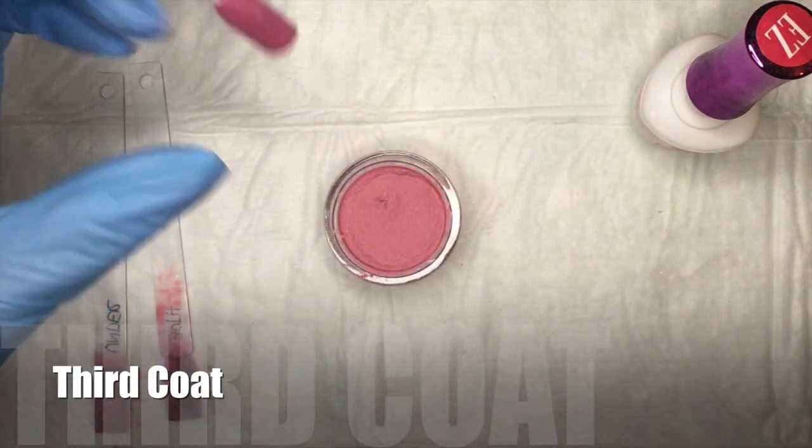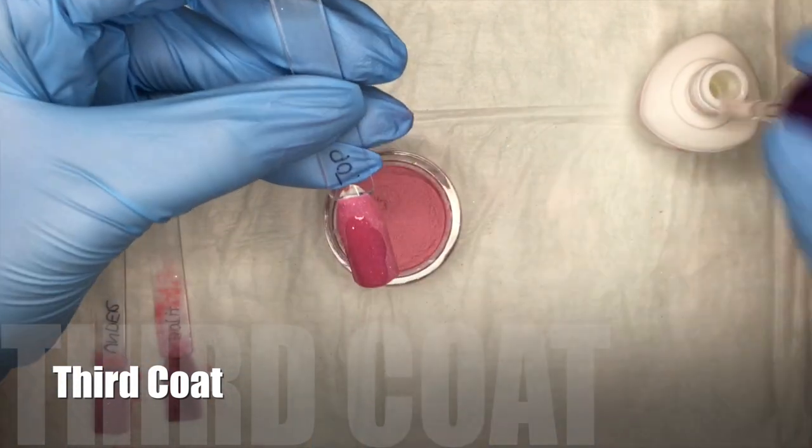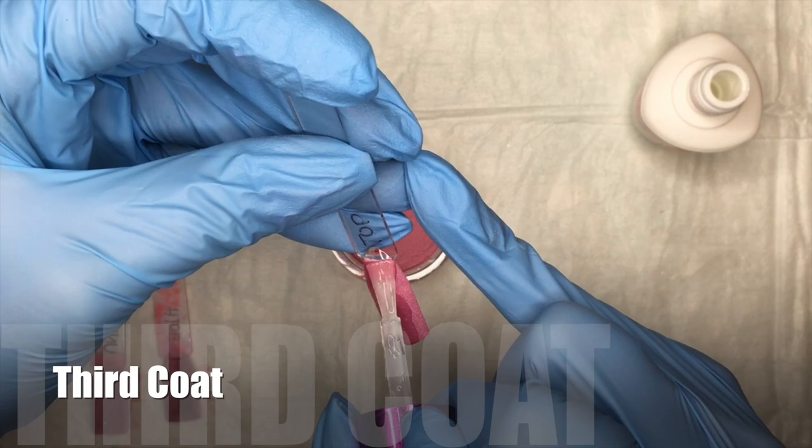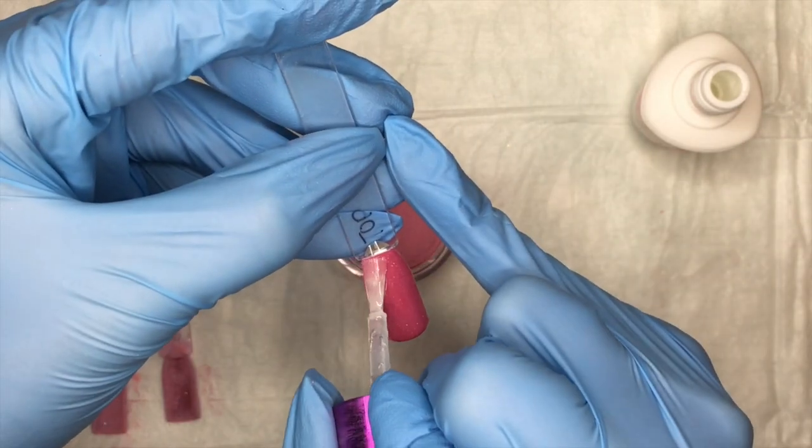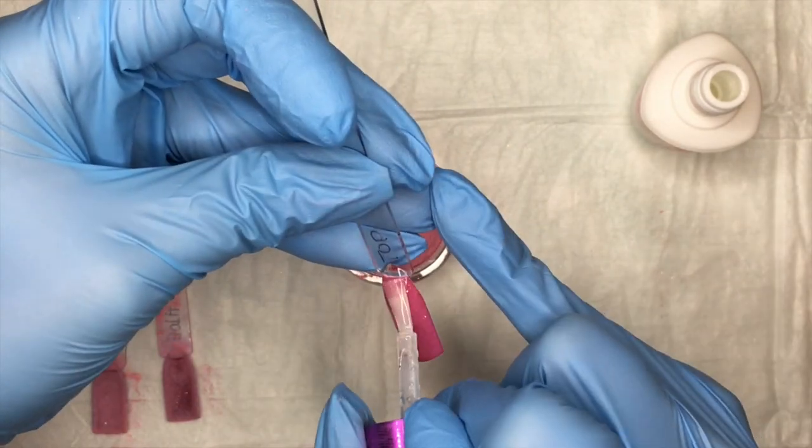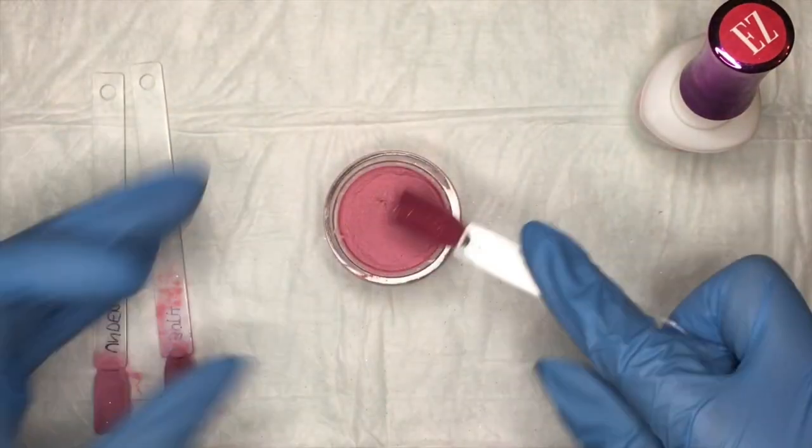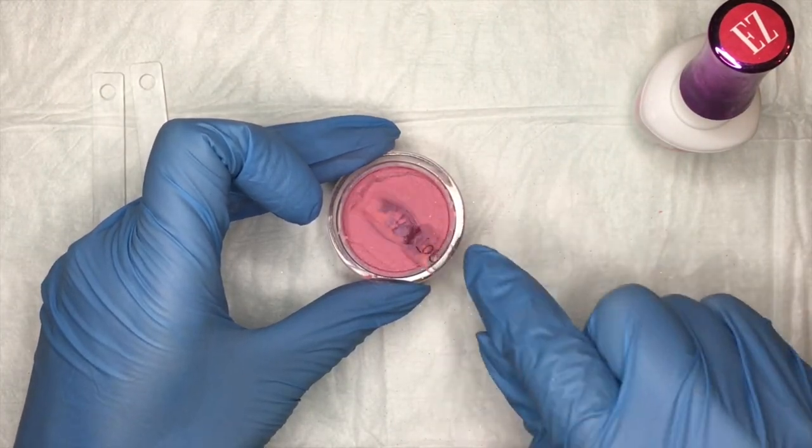So now we're going to be moving on to the third coat for the top and the under swatch sticks. It's going to stay exactly the same. You're going to follow the same steps as you did from the first and the second coat. Nothing's going to change. So I'm just going to apply a base and then I'm just going to dip into the powder.